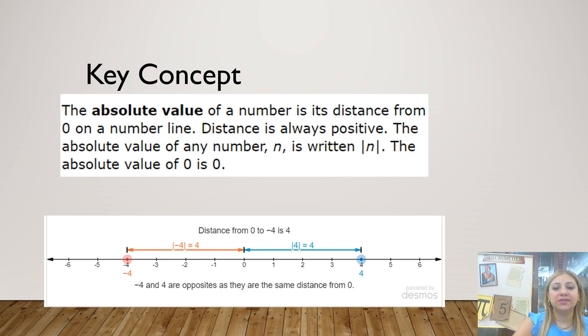This is our key concept. The absolute value of a number is its distance from 0 on a number line. Distance is always positive. The absolute value of the number n is written |n|. The absolute value of 0 is 0.